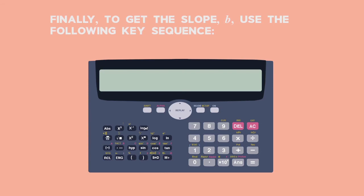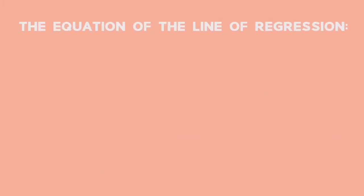Finally, to get the slope B, use the following key sequence: Shift, 1, 5, 2 and equals. The calculator gives B equals 5.9 rounding up to one decimal place. The equation of the line of regression is thus Y hat equals 5.9X plus 22.3.